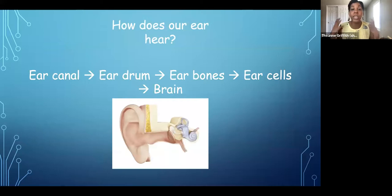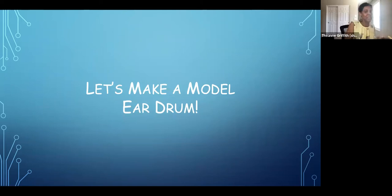So now we are going to make a model eardrum. So when sound comes into our ears, it goes through something called an ear canal, and then bounces off of a little structure right here called an eardrum. And that eardrum moves a few little bones in our ears, which then moves some special ear cells, and then those signals are sent to our brain. So we're now going to make a model eardrum to see exactly how that happens. So I'm actually going to stop sharing my screen briefly, so you guys can see me more fully.